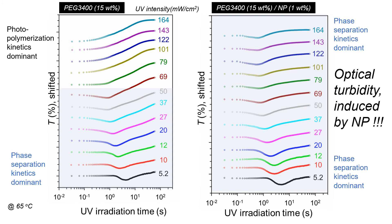These results show the silica nanoparticle effect on the UV transmittance change in PEG-containing resin along with UV intensity. Without nanoparticles, the optical turbidity of the resin gradually decreases and disappears under high UV intensity. But in the 1 weight percent silica nanoparticle composite resin, the optical turbidity is maintained even at high UV intensity. This behavior can be described by this diagram.